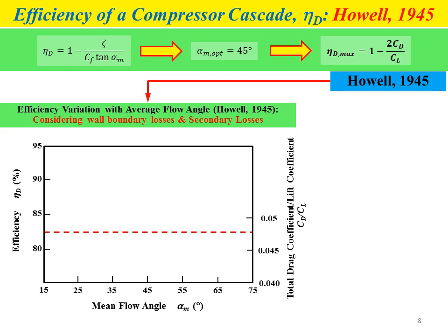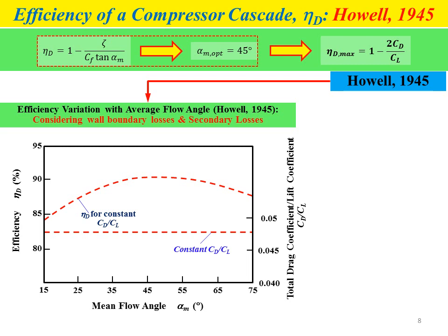Howell conducted two cases. In Case 1, he maintained a constant value of cd over cl, shown as a dashed red line, and obtained the efficiency curve for the compressor cascade. From the graph, the curve shows a maximum efficiency of approximately 90.3% at a mean flow angle of 45 degrees, with a cd over cl value of approximately 0.048.